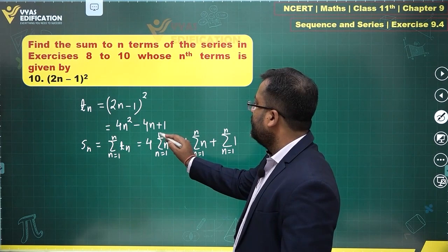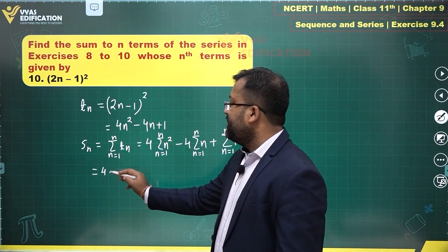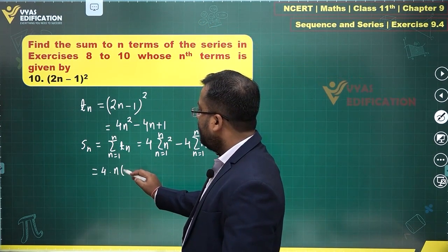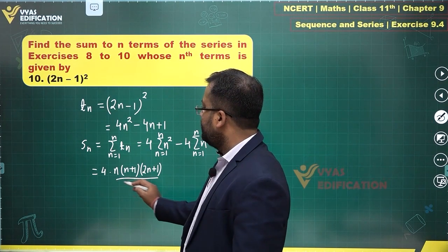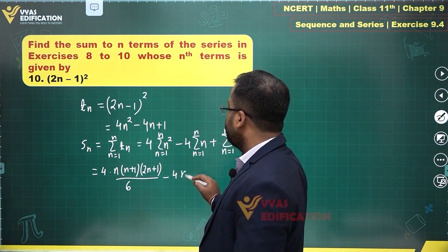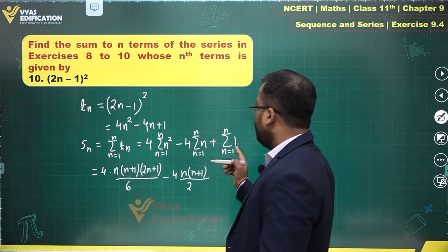4 times Σn² will be n(n+1)(2n+1)/6, minus 4 times n(n+1)/2, and Σ1 is 1+1+1 repeated n times, which is simply n.